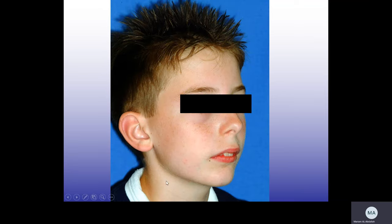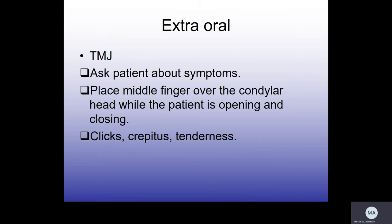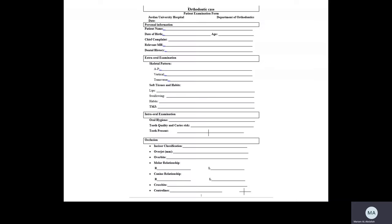The final swallowing pattern is lower lip-to-tongue, as seen in this case. You must also write down any relevant habits such as thumb-sucking or nail-biting. Then assess the temporomandibular joint by asking the patient about any pain, clicks, crepitus, tenderness, previous accidents, or problems with the TMJ. This concludes the extra-oral examination covering the skeletal pattern, soft tissues, and temporomandibular joint.